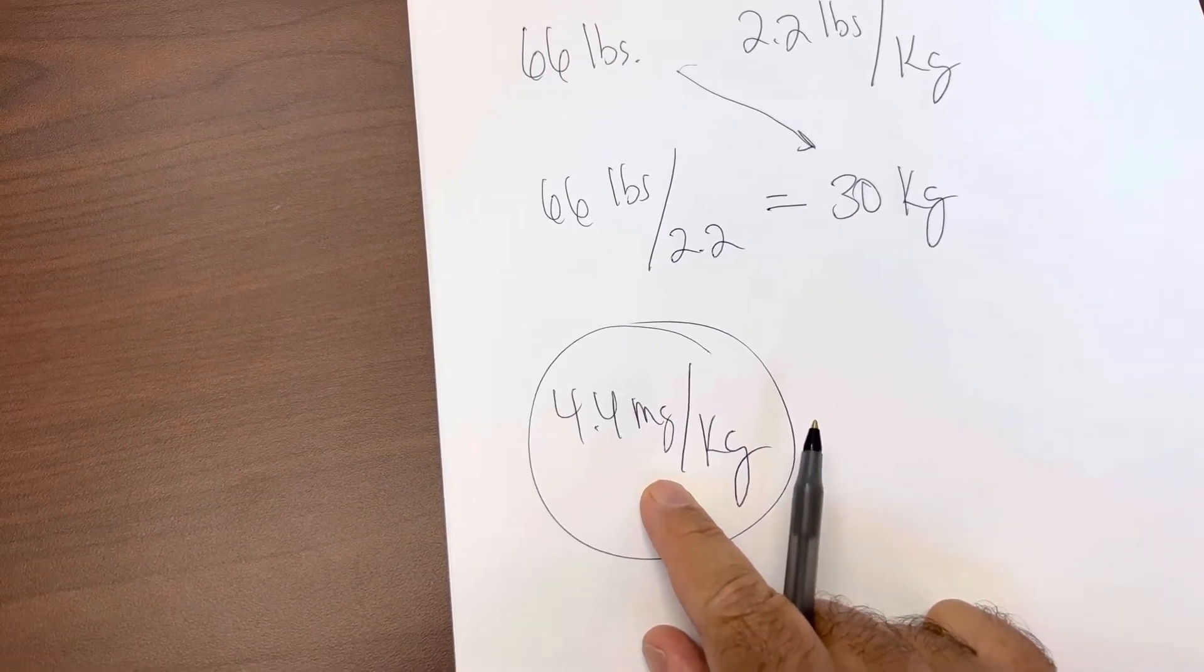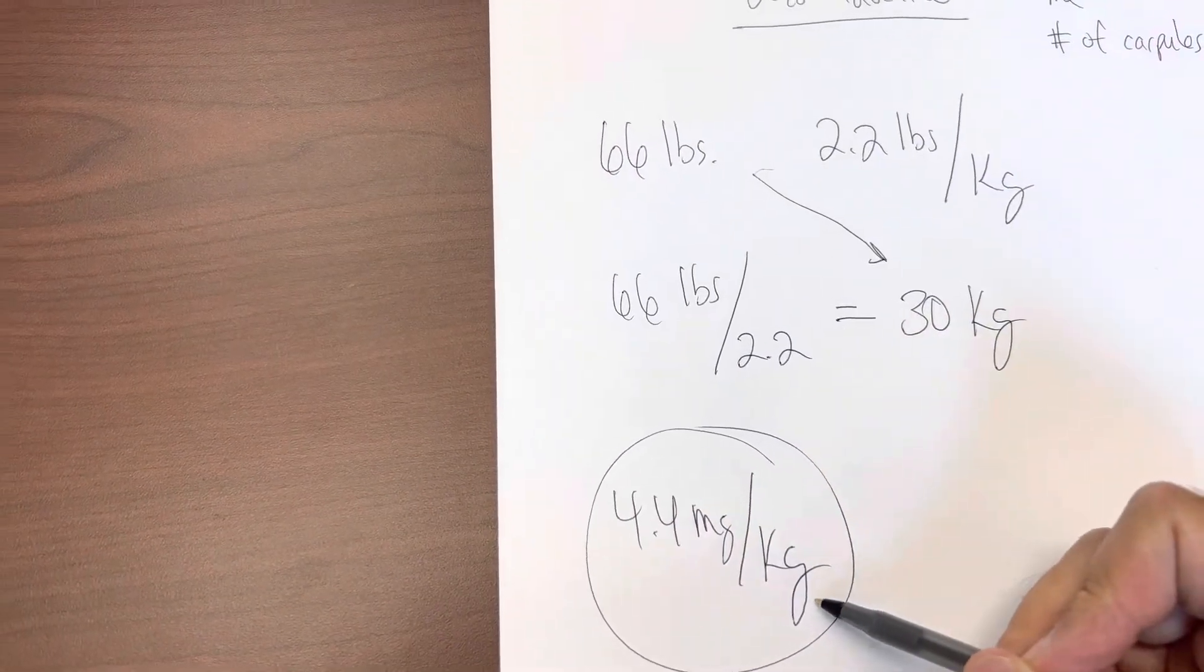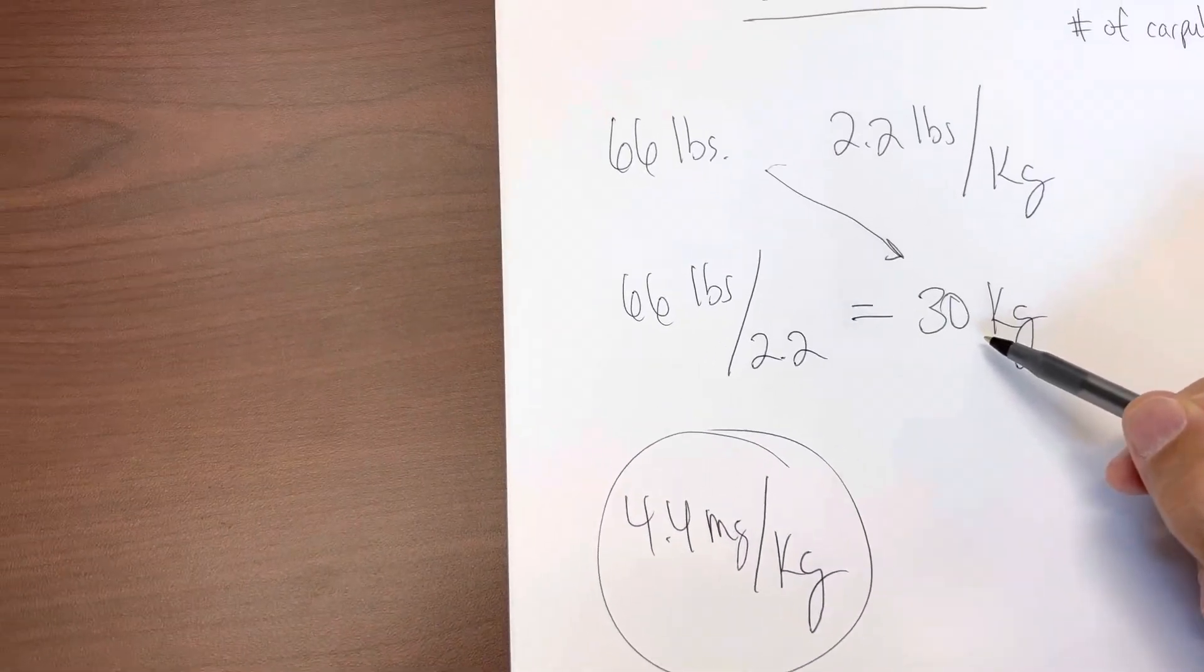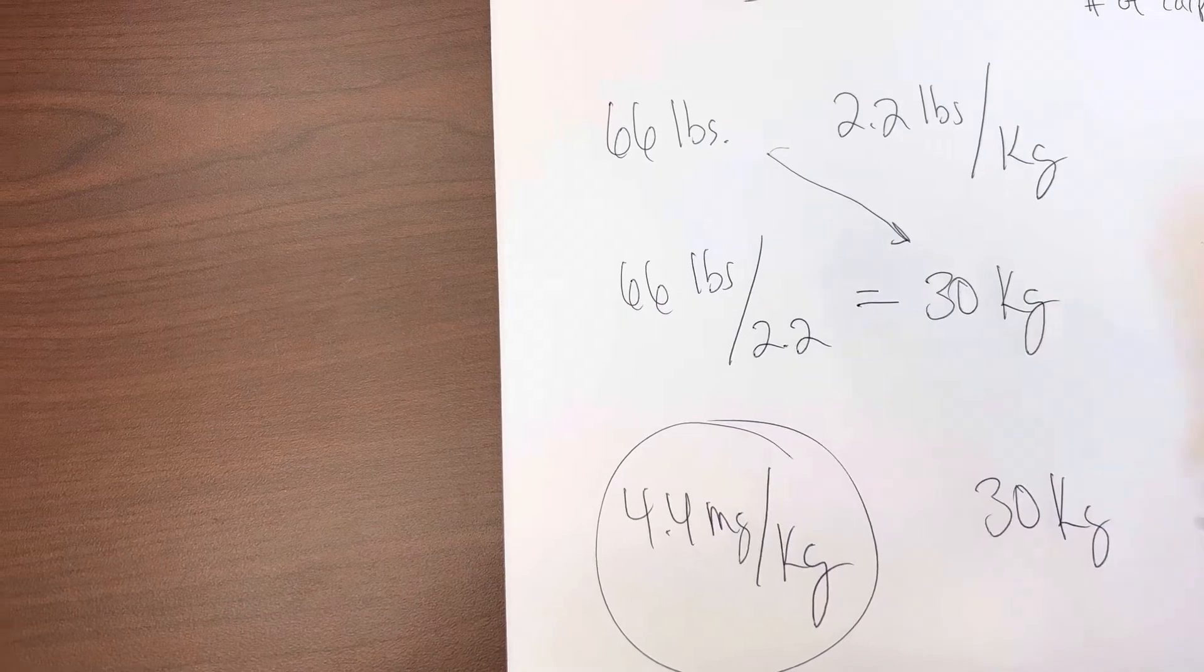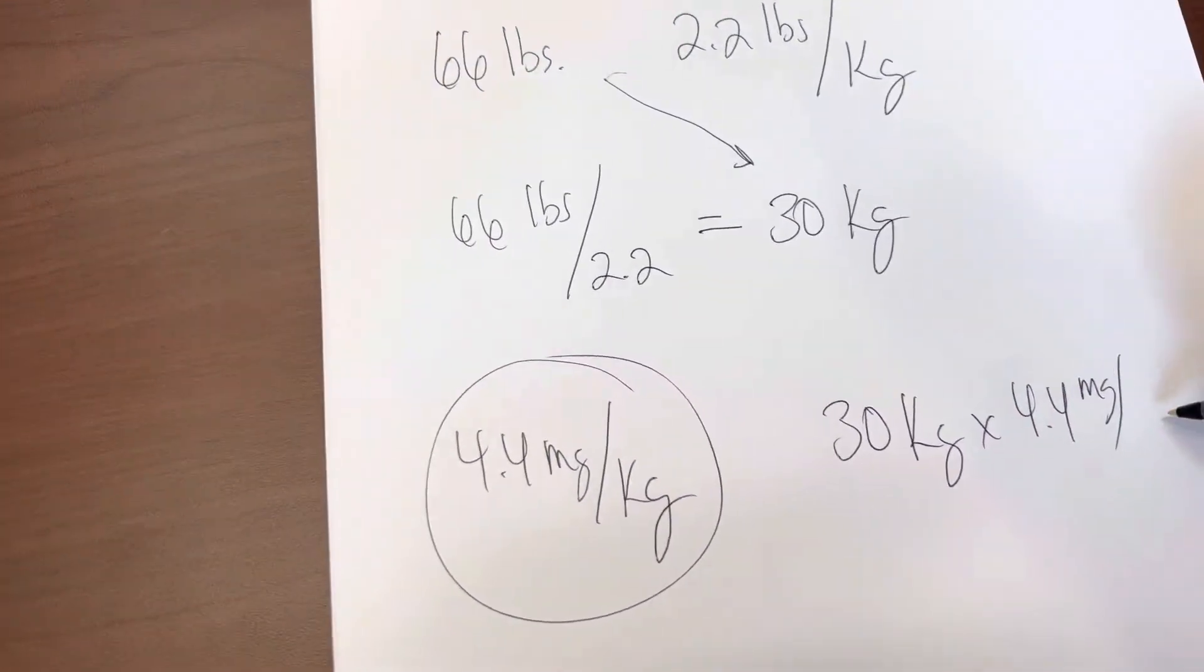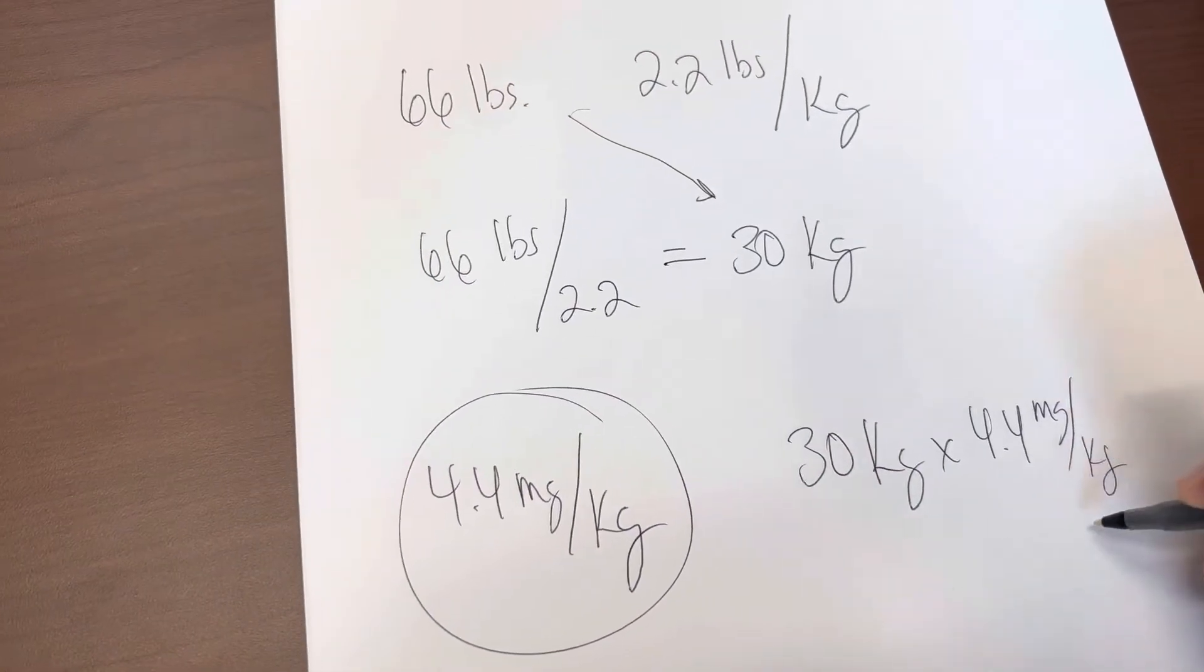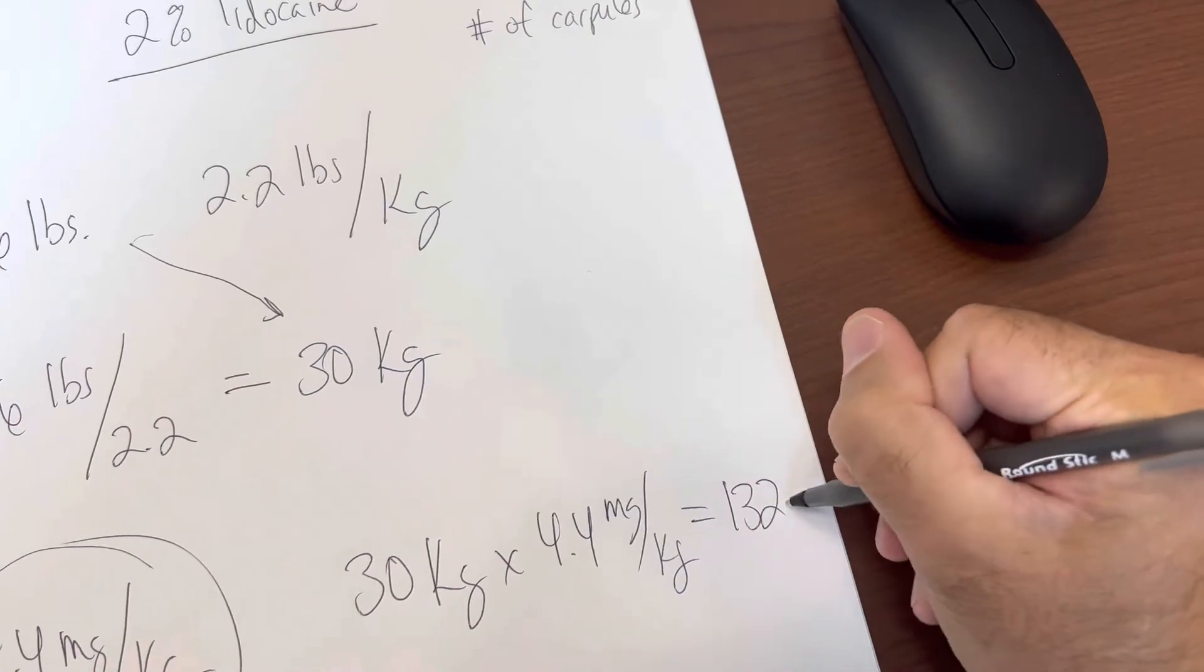And most test questions will, but if that's the case and they do tell us that it's 4.4 milligrams per kilogram is the max dose, and we have a 30 kilogram child, then what we need to do is multiply 30 kilogram child times 4.4 milligrams per kilogram.